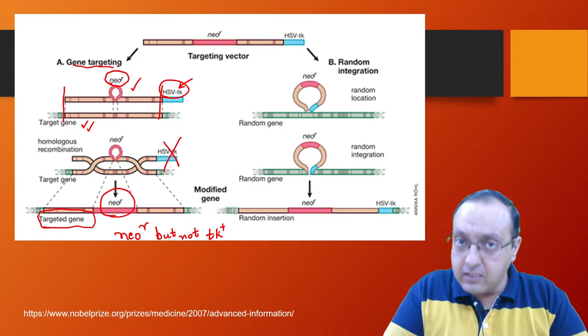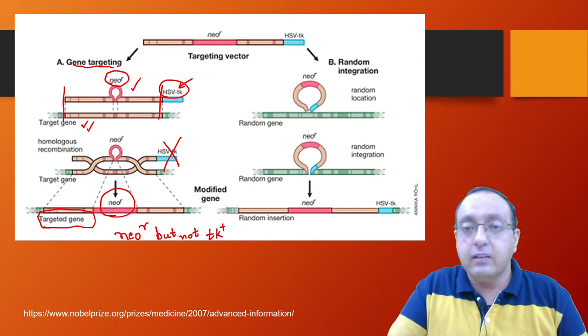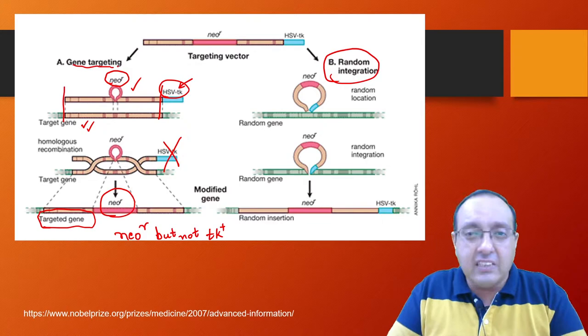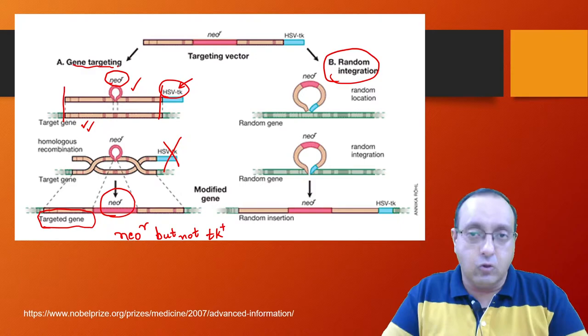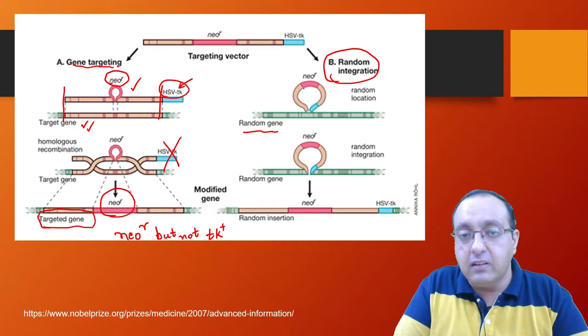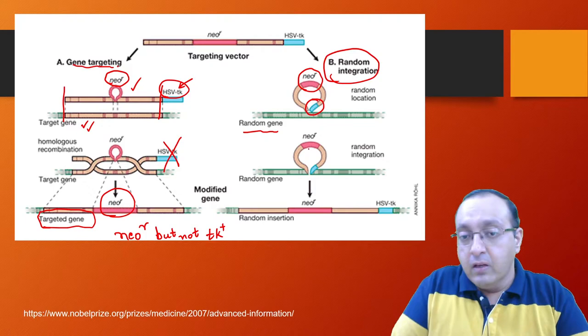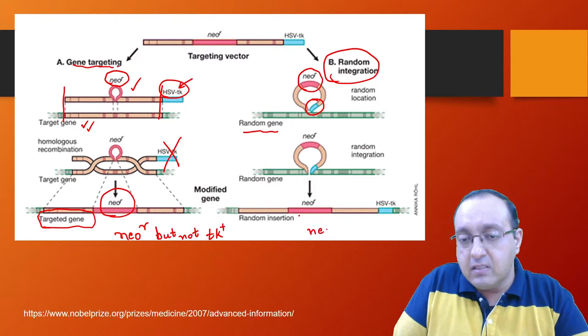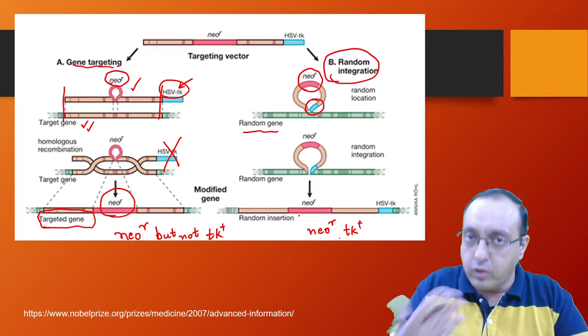Now the other process that can happen—the off-target effect—is random integration. This can also happen if there is a slight chance of some homology between your sequence and another chromosomal location. Then we have this random gene, and here what will happen is you can see the red neomycin resistance gene as well as the blue thymidine kinase gene. Both of them will get integrated, and this cell will be neomycin resistant and it will be thymidine kinase positive. So it will express thymidine kinase.